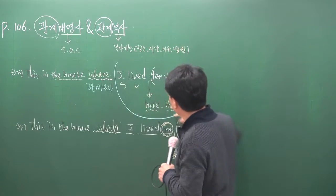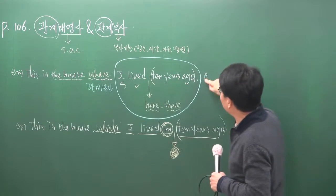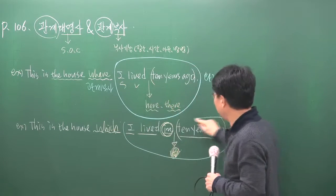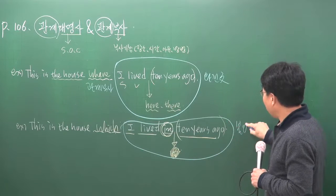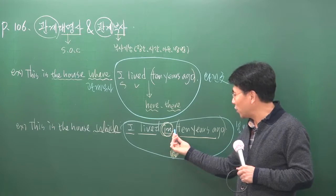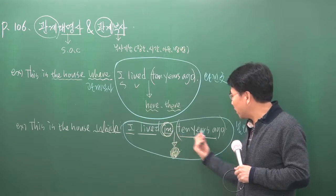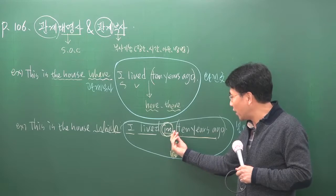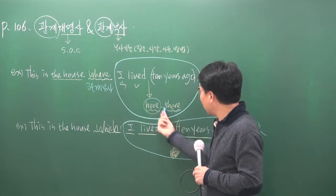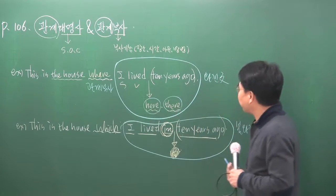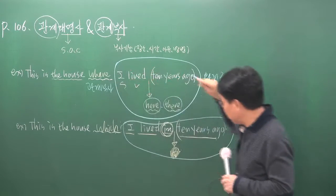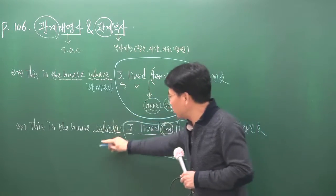결론: 관계부사 뒤에는 완전한 문장 구조가 나오고, 관계대명사 뒤에는 불완전 문장 구조가 나옵니다. 부사의 기능만 필요하면 관계부사를 쓰고, 명사의 기능이 채워져야 되면 관계대명사를 씁니다.